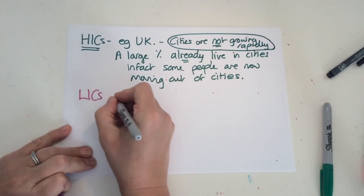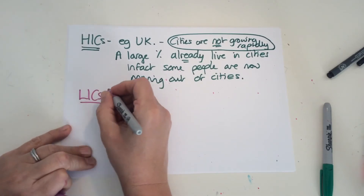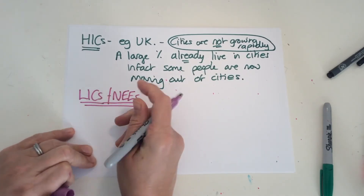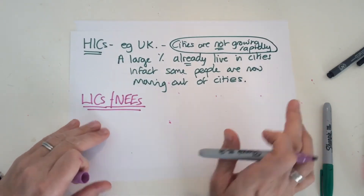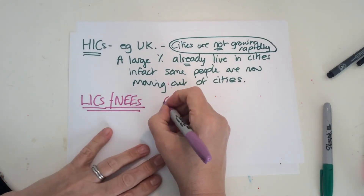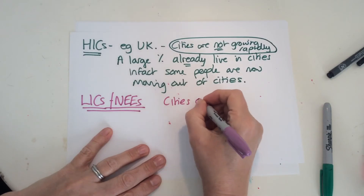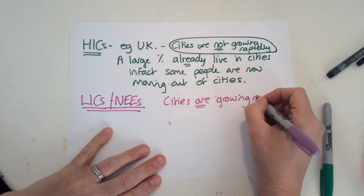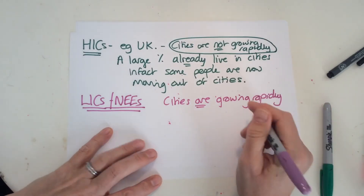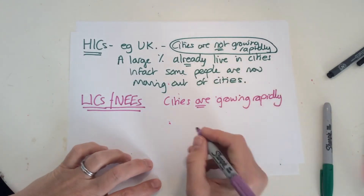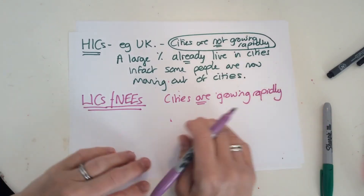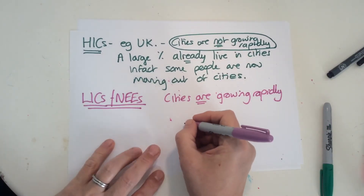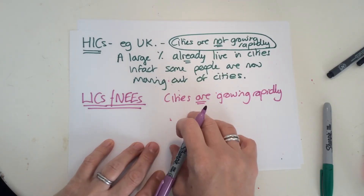LICs — low income countries — and NEEs, newly emerging economies, are different. In these places, cities are growing rapidly in population. These are getting bigger and bigger.